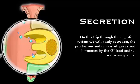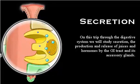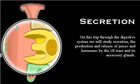On this trip through the digestive system, we will study secretion: the production and release of juices and hormones by the GI tract and its accessory glands.